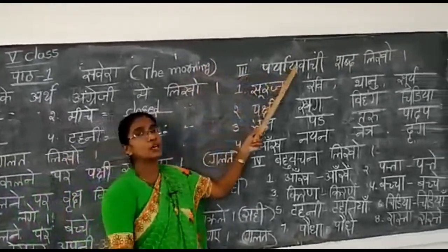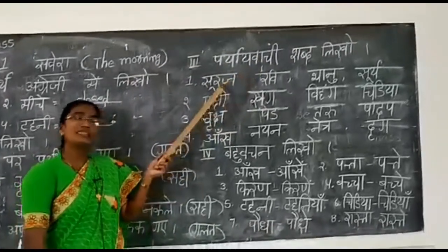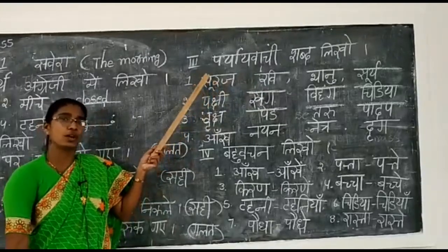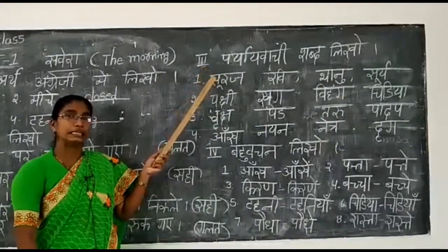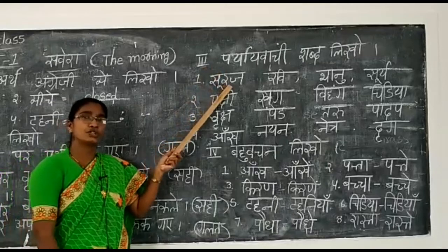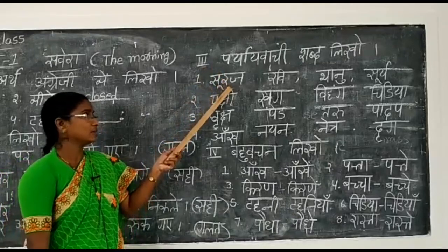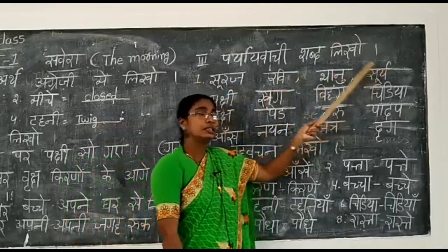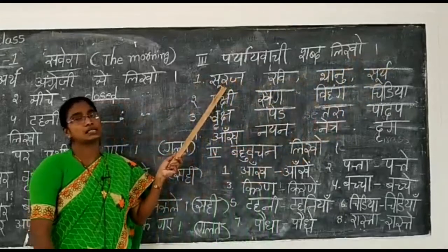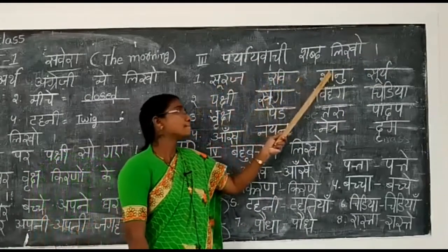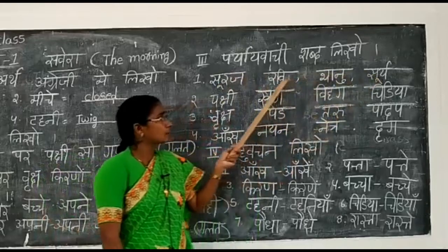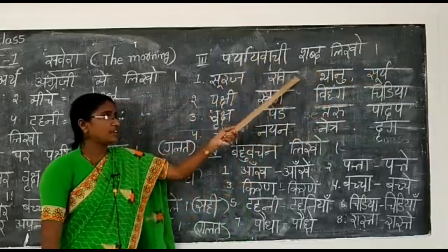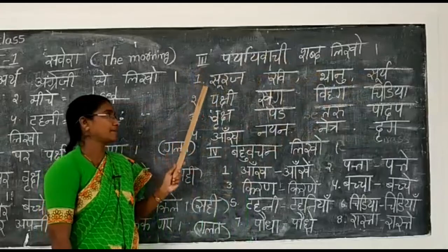Third exercise: 'Pariyai shabd likho' - write synonyms. Pariyai shabd means synonyms, same as 'nanartdhalu' in Telugu - words with the same meaning in the same language. First word: 'Suraj'. Its synonyms are 'Ravi', 'Bhanu', 'Suriyo'. All four words - suraj, ravi, bhanu, suriyo - have the same meaning: sun.